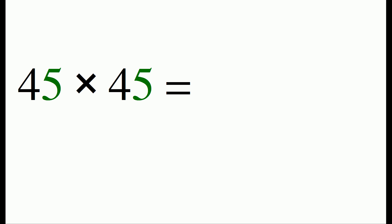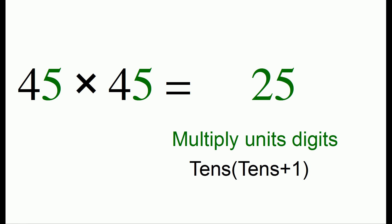Let's say we want to do 45 times 45. This multiplication problem works because 5 plus 5 is 10 and the tens digits are the same. So our first step we multiply the units digits. 5 times 5 is 25. Then we take the tens digit of 4 and multiply it by one more than itself to get 20.